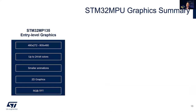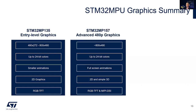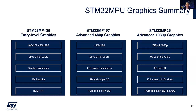To summarize the portfolio: the MP135 offers entry-level graphics on embedded Linux at 480x272, up to 720p — depending on your UI complexity. It supports nice 2D graphics, RGB TFT, and small animations. The MP157 is the step up: advanced graphics at 480p and above, 24-bit colors, 2D and 3D animations, RGB TFT and MIPI DSI display interfaces. And lastly, the MP25 series offers advanced 1080p graphics, 720p and 1080p, 24-bit color, 2D and 3D full-screen animations, H.264 video, and all the important display interfaces used for that resolution.